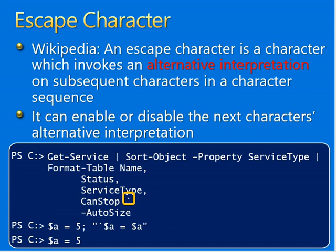When indicating line continuation, the escape character tells Windows PowerShell that the command continues to the next line. The last use is indicating special characters — when used with quotation marks, the escape character indicates special characters that provide instructions to the command parser.